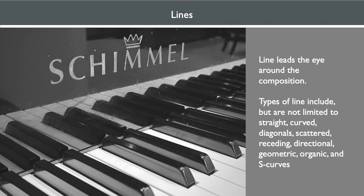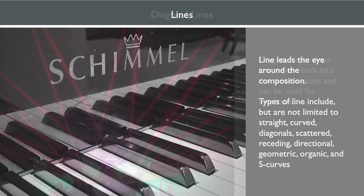Lines create shape, pattern, depth, and perspective. Lines lead the eye around the composition, including the focal point or subject, or to create abstract designs. Types of line include, but aren't limited to, straight, curved, diagonal, scattered, receding, directional, geometric, organic, and even S-curves.